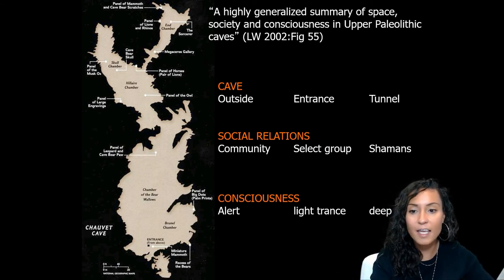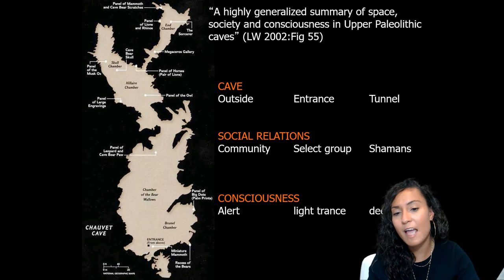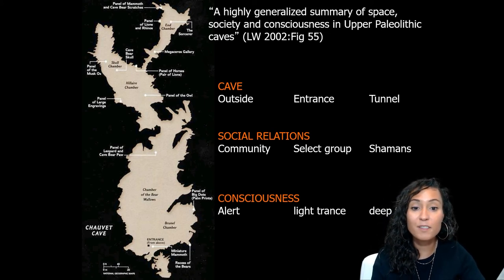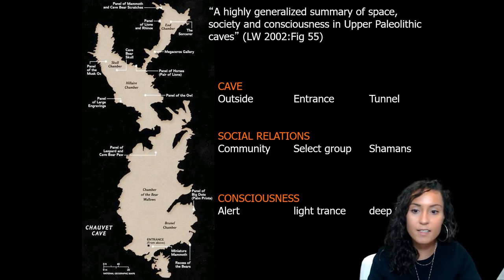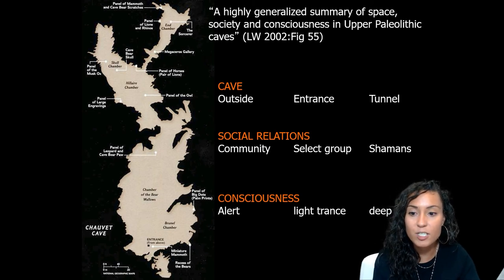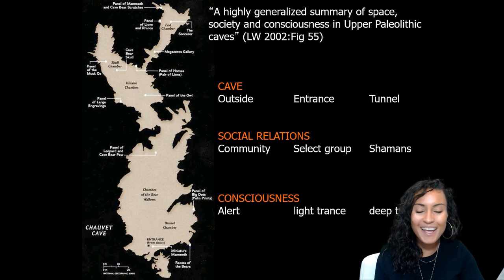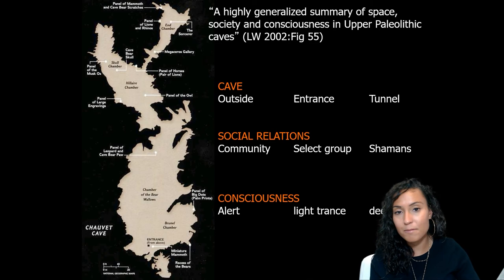As you progress through the cave, you entered into smaller, more restricted areas. Large, embellished chambers were probably communally produced. Smaller chambers further back, where only one or two people could fit, would be for a select few, with access regulated by shamans. Outside the cave was least restrictive — open to the community, representing everyday conscious life. The entrance would be open to some individuals, associated with daydreaming and a light trance state. The far end of the cave would be the smallest and most exclusive, with full-on hallucinatory experiences. But the question remains: is there any evidence that social hierarchies were actually beginning to emerge at this time?